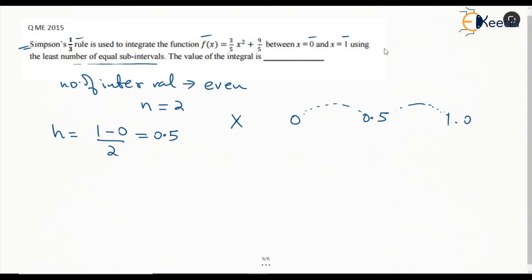Now let's see what is the function value or y for these cases. For x=0, this function f(x) equal to 3/5 x² plus 9/5 becomes 9/5. At x=0.5, this is 3/5 times (1/2)² plus 9/5.